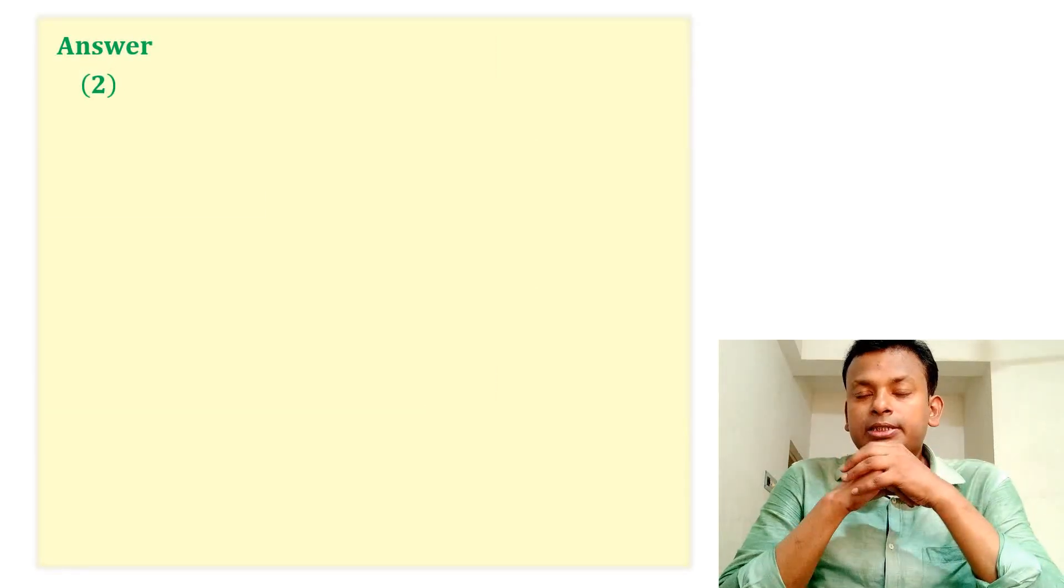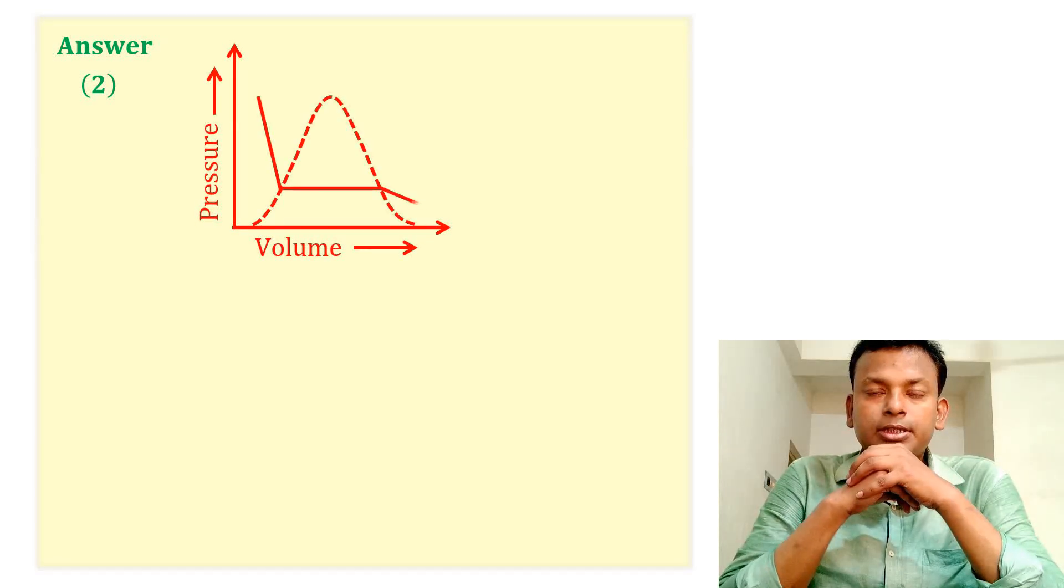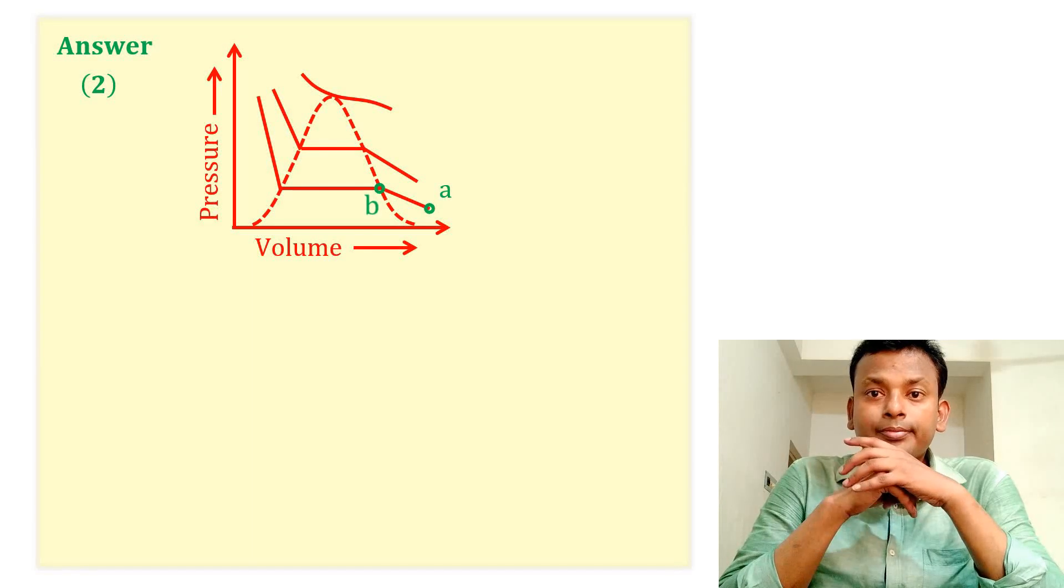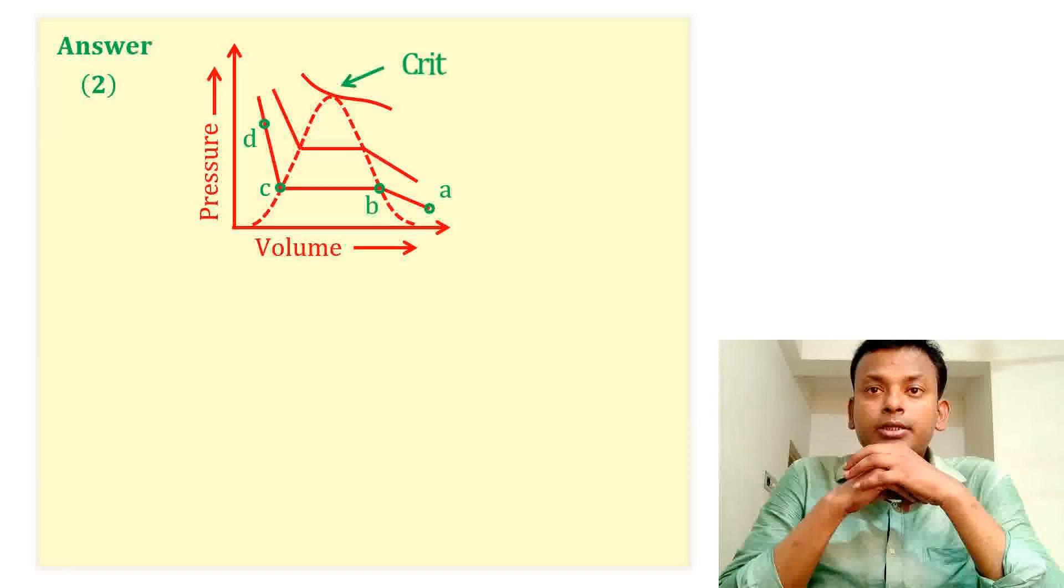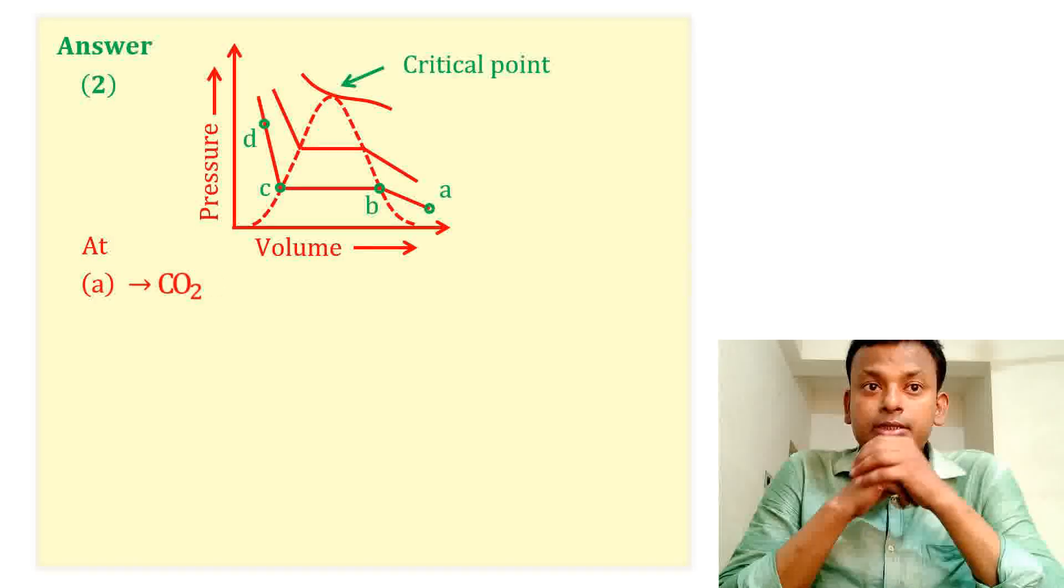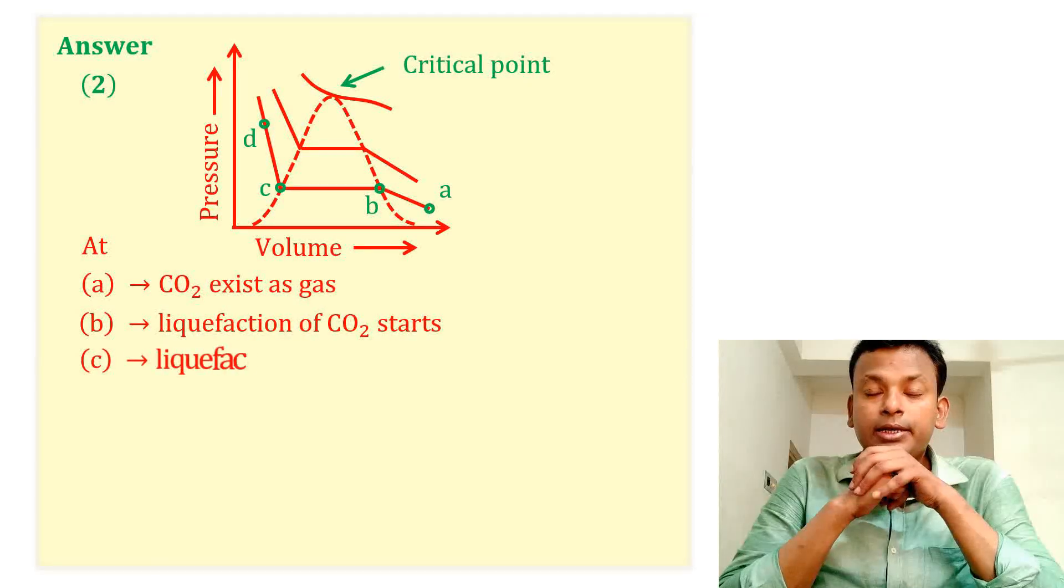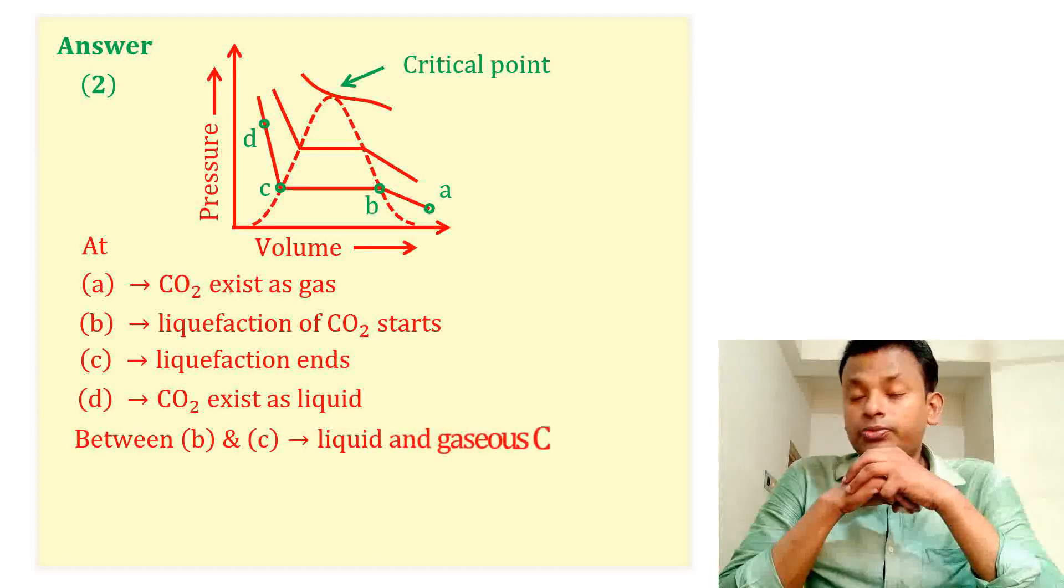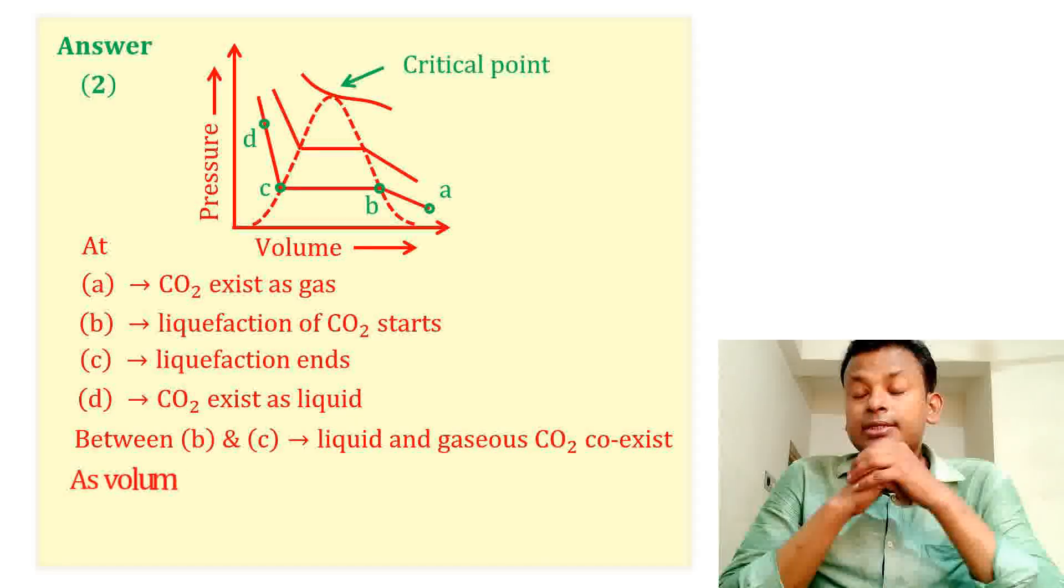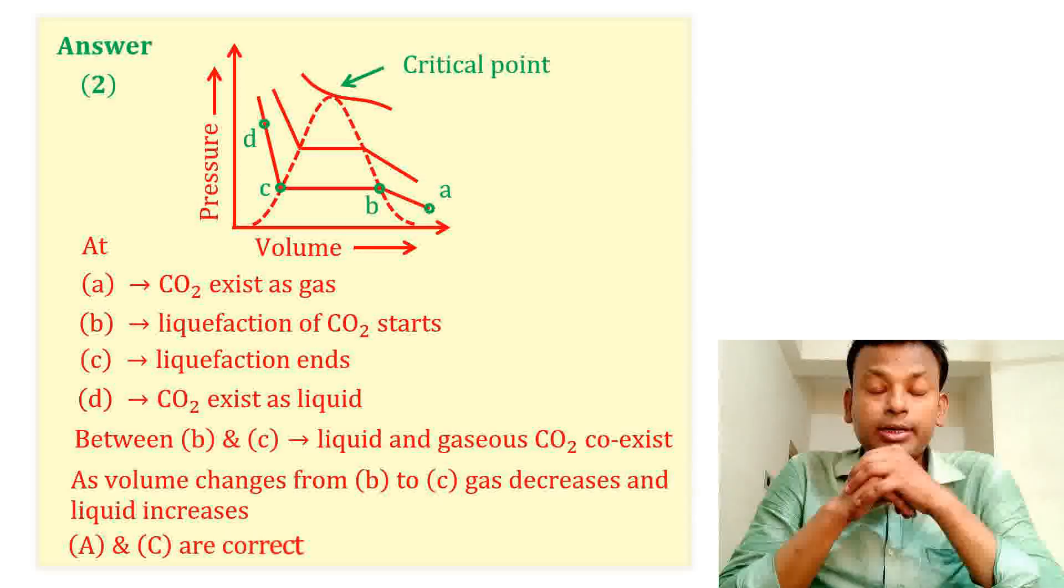Answer is two, that is two statements are correct. This is the graph and this is the critical point. At A, CO2 exists as a gas. B: liquefaction of CO2 started. C: liquefaction complete. D: CO2 exists as a liquid. Between B and C, liquid and gaseous CO2 coexist. As volume changes from B to C, gas decreases and liquid increases. So A and C are correct answers, so number of statements: two statements are correct.